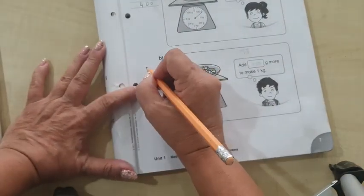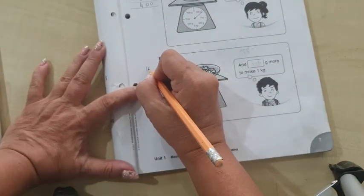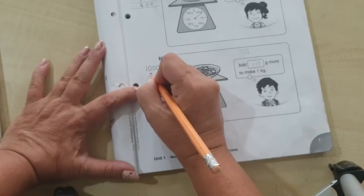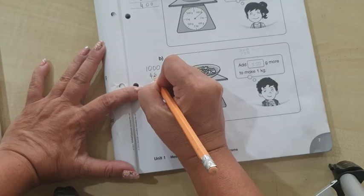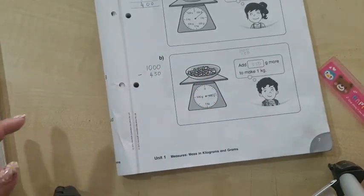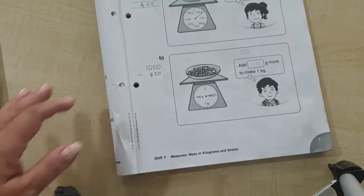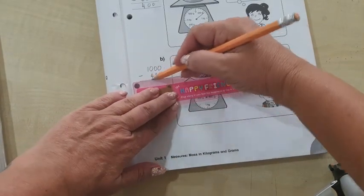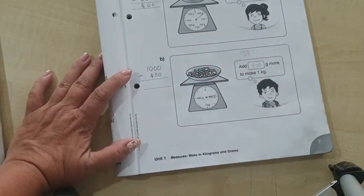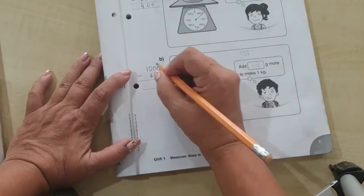We need to make 1 kg, which is 1000 grams. So 1000 minus 450. Minus as normal.